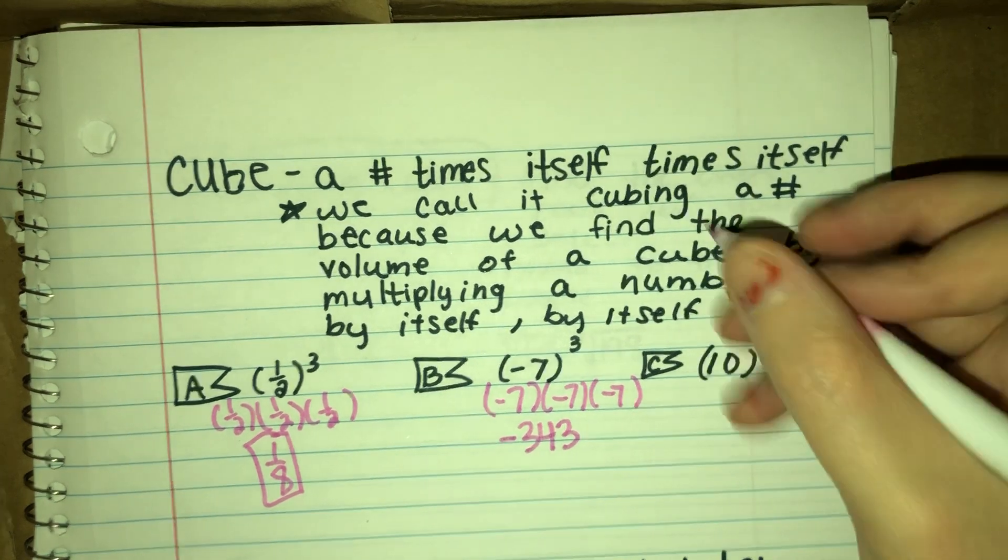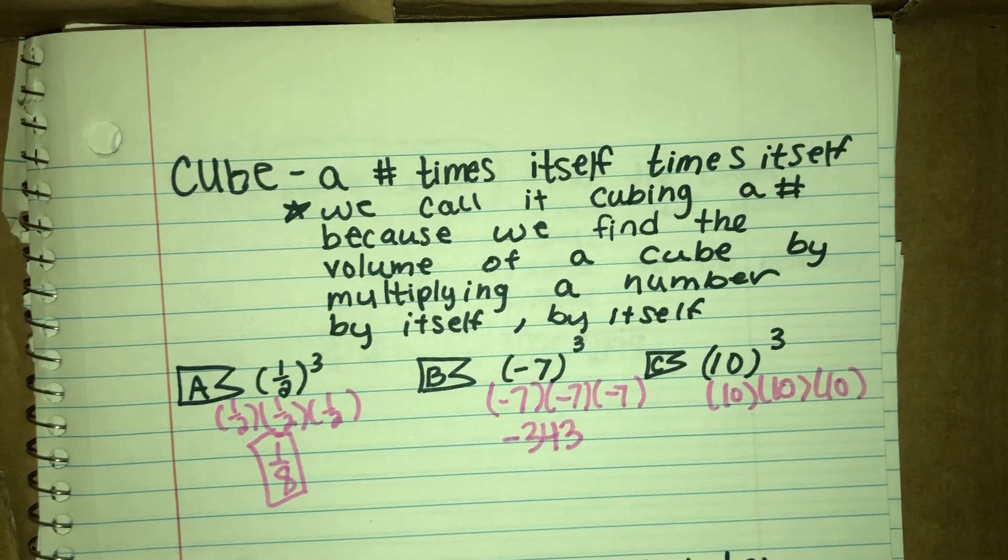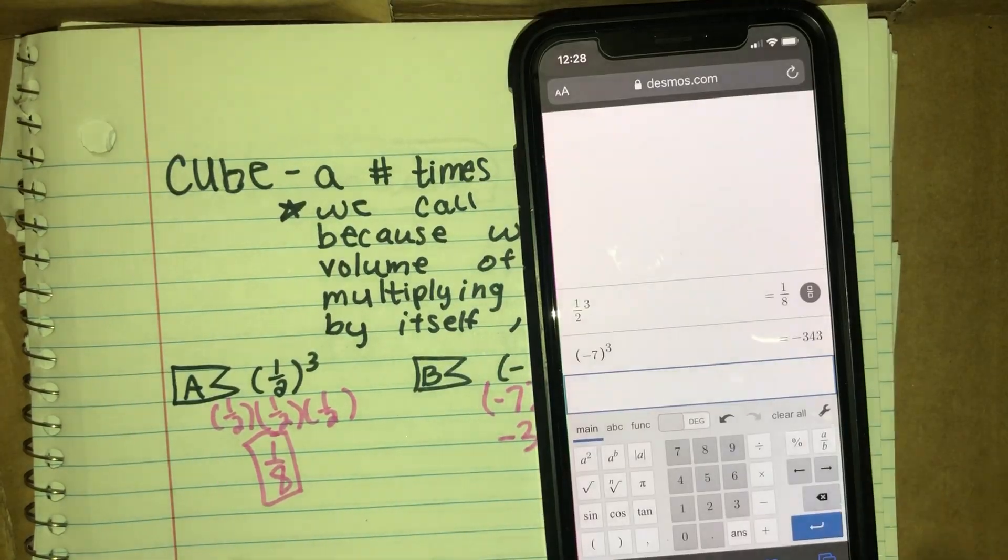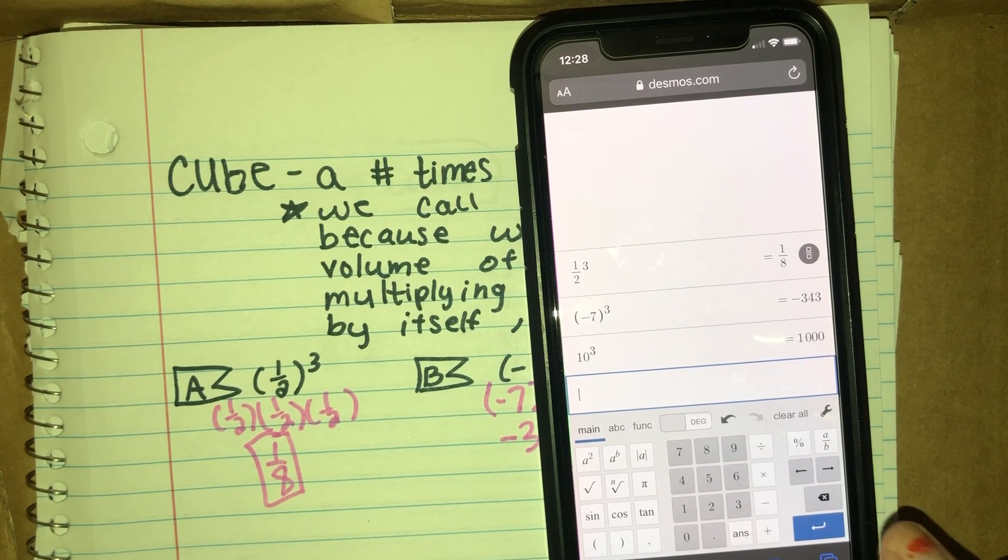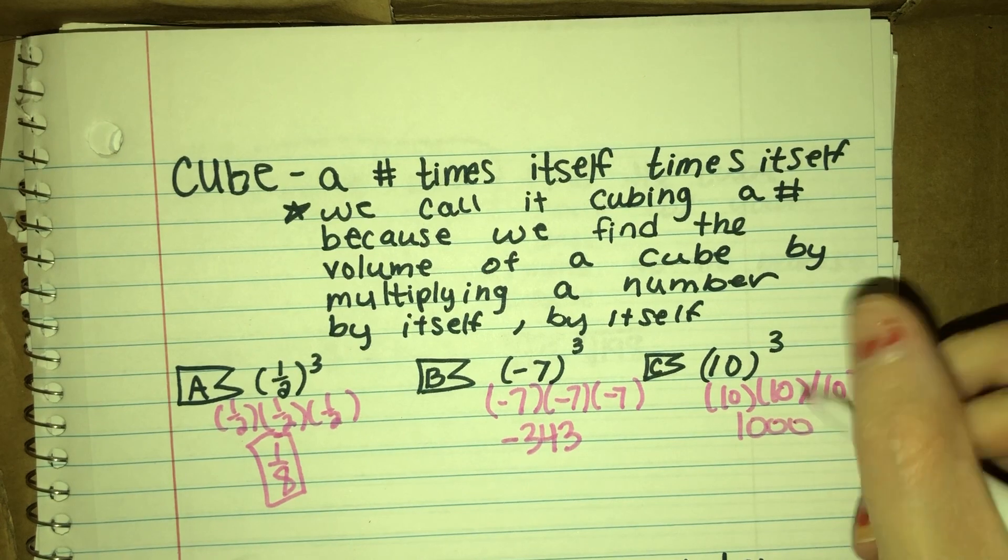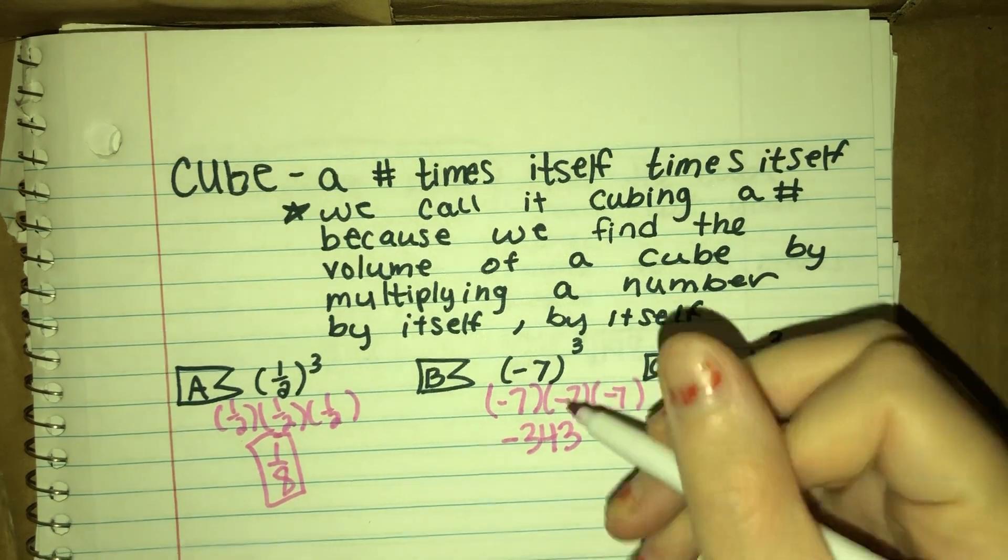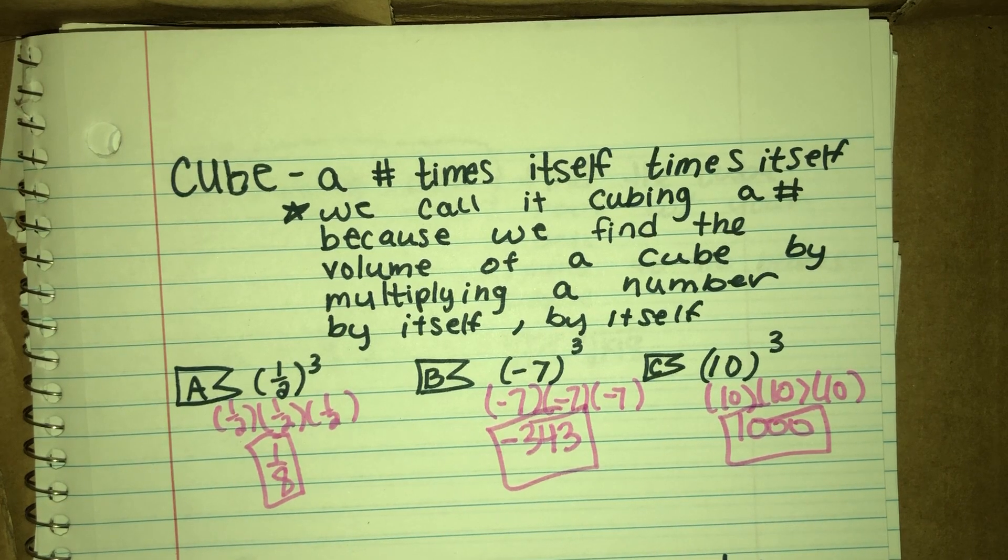Okay, and then the final one is 10 to the third power, which is 10 times 10 times 10. Or if you put in your calculator, 10 to the third power should give you 1,000. And that is that. I will make another video for the next couple of questions.